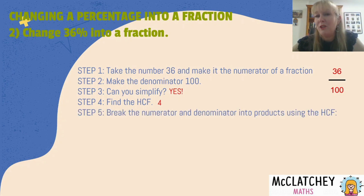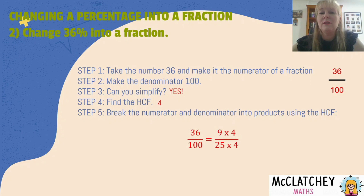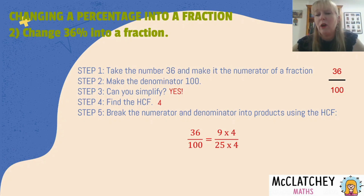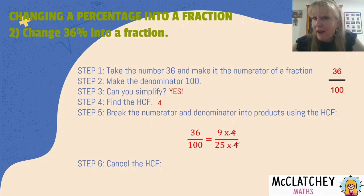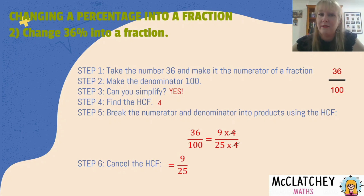Step five: we're going to break the numerator and denominator into products using the highest common factor. We know 36 equals 9 × 4, and 100 equals 25 × 4. Breaking those numbers into products using the HCF makes it easy to do some cancelling. We cancel the highest common factor — 4 divided by 4 equals 1. So now we have a simplified fraction for 36 out of 100: it's 9 over 25, or nine twenty-fifths. That's how we've changed the percentage into a fraction.